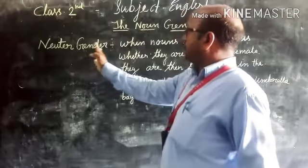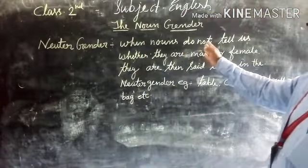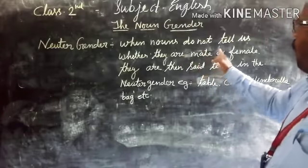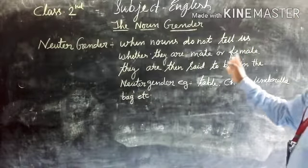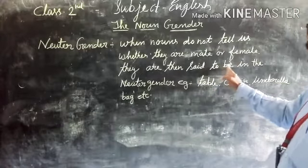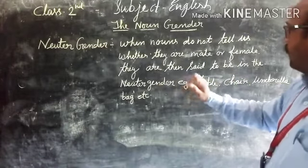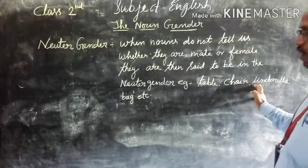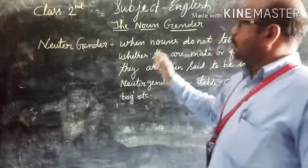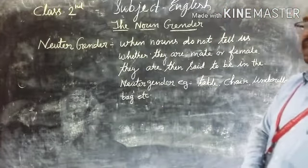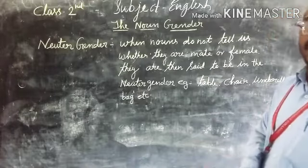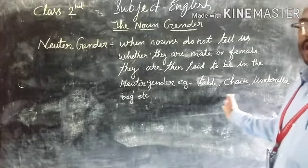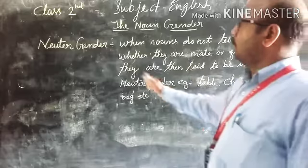Another one is neuter gender. When nouns do not tell us whether they are male or female, they are said to be in the neuter gender. Examples: table, chair, umbrella, bag, etc. These are called neuter gender.